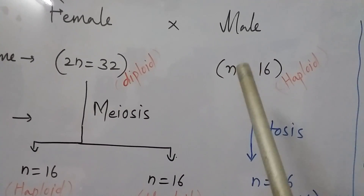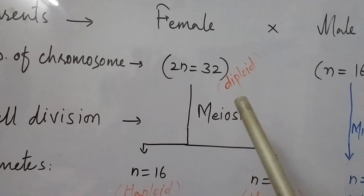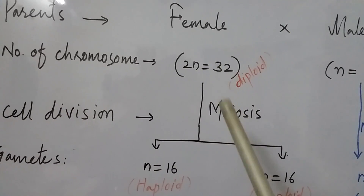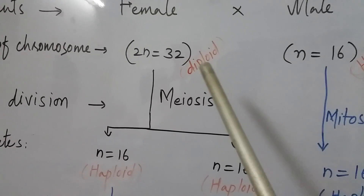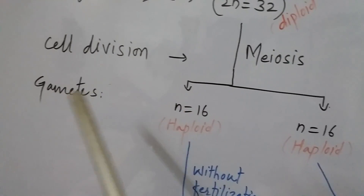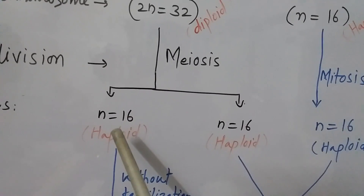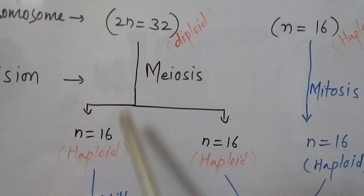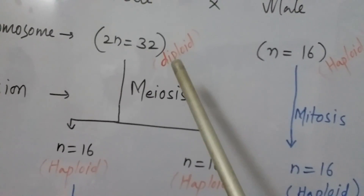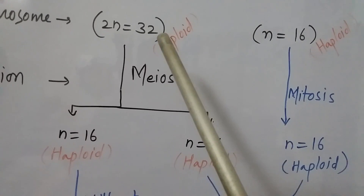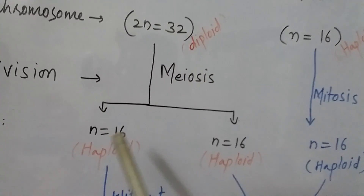Crossover takes place between the male and female, that is between the haploid and diploid organisms. The female cell with 32 chromosomes undergoes meiosis, a type of cell division in which a diploid cell converts into haploid cells. So the cell with 32 chromosomes divides by meiosis into two gametes, each containing 16 chromosomes.